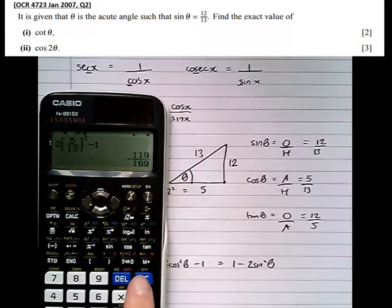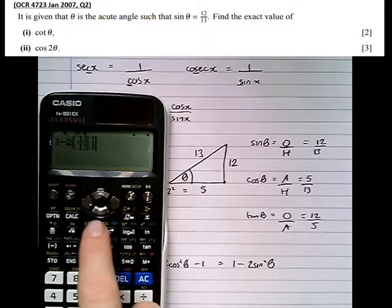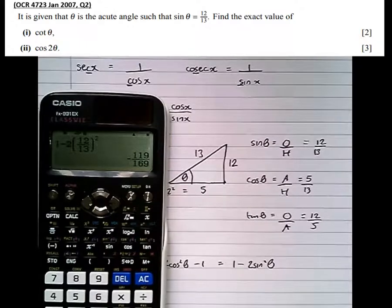Let's try 1 - 2sin²θ. So 1 minus 2 times sine theta, which is (12/13)², gives again -119/169.